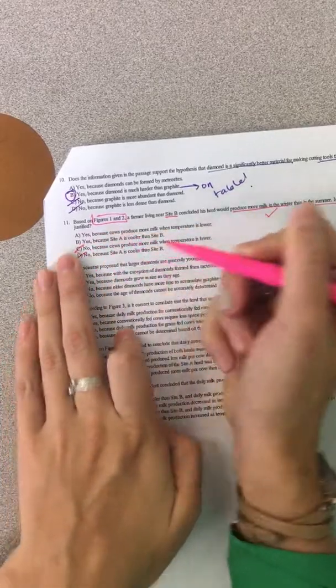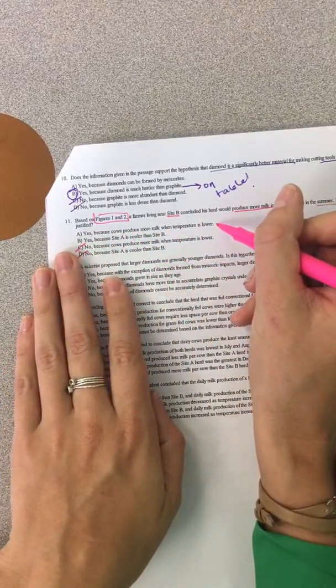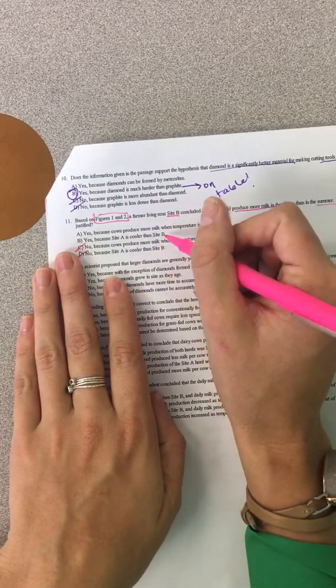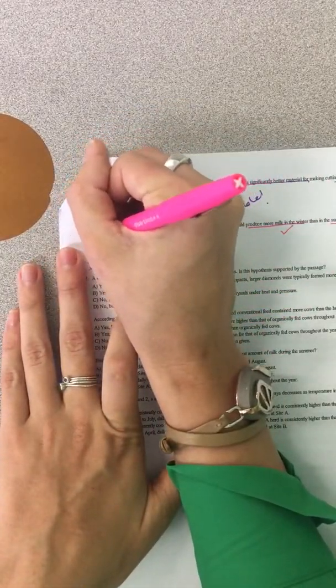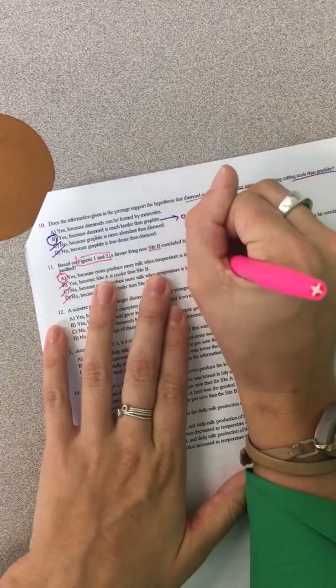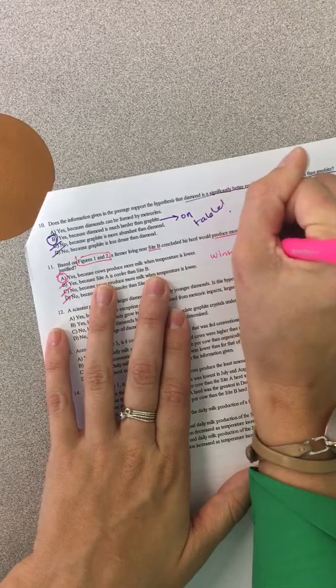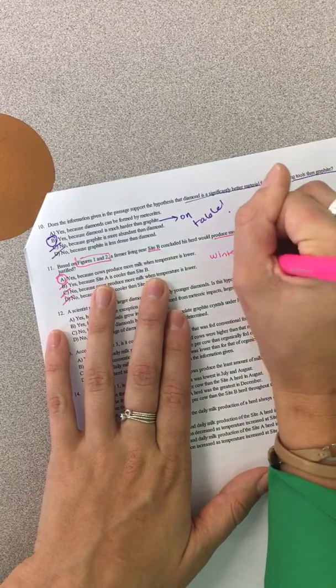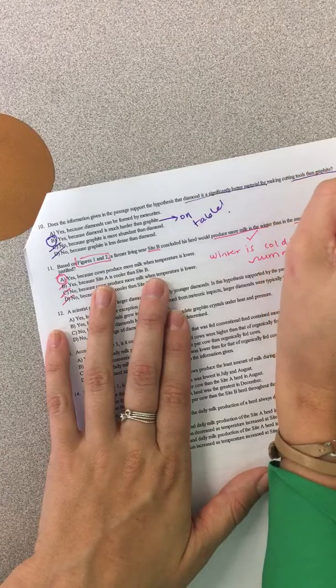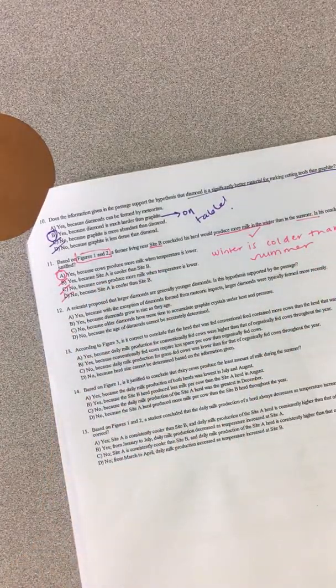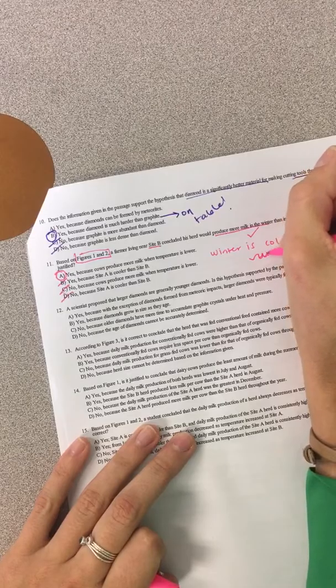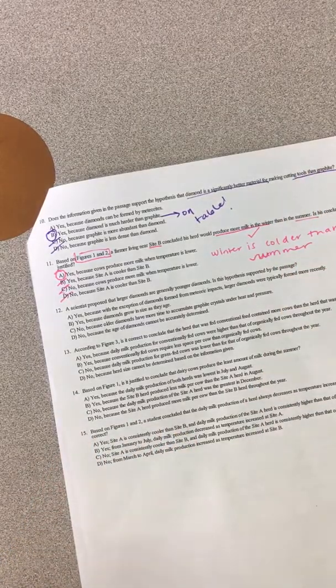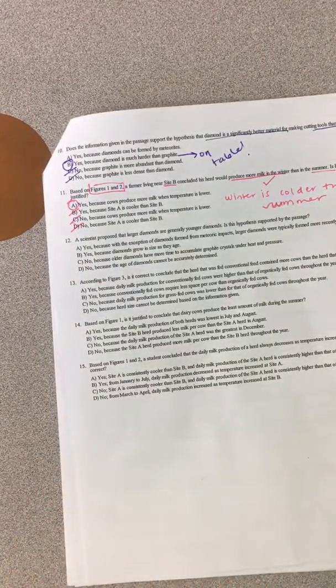So that's a yes question. Now yes, because cows produce more milk when the temperature is lower. Yes, because site A is cooler than site B. So we're going to choose answer A because we know that the winter is colder than summer. Yeah, it looks like I spelled summer wrong, but it's just because I was a little floaty. Anyway, my bad.